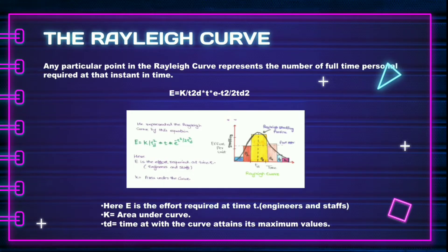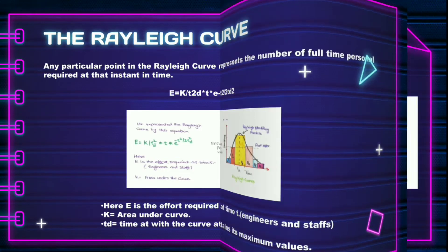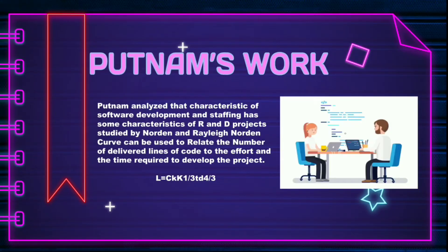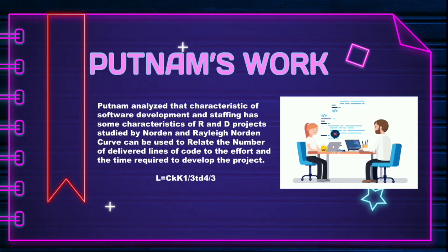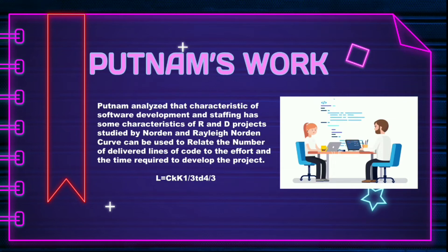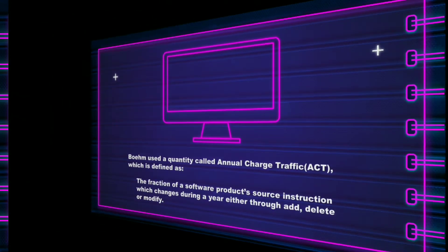Let's see about Putnam's work. Putnam analyzed the characteristics of software development and found that staffing has some characteristics of R&D projects studied by Norden and Rayleigh. The Norden curve can be used to relate the number of delivered lines of code to the effort and the time required to develop the project. This is the equation of Putnam's work.